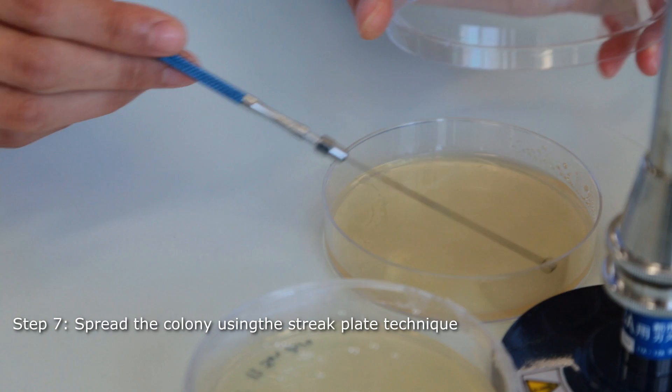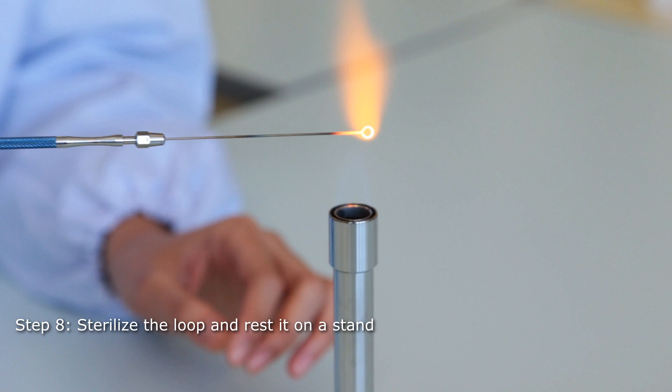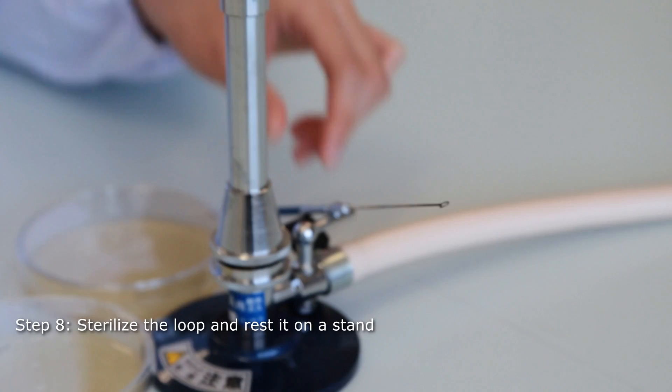Here is a visualization of the streaking made using a marker. Sterilize your loop using the flame. Watch out for projections due to boiling of remaining material on your loop. Remember that you should wear protective eyewear whenever using a Bunsen burner.